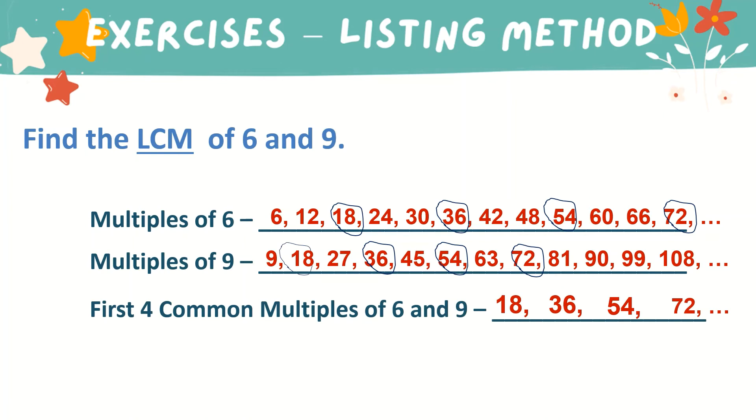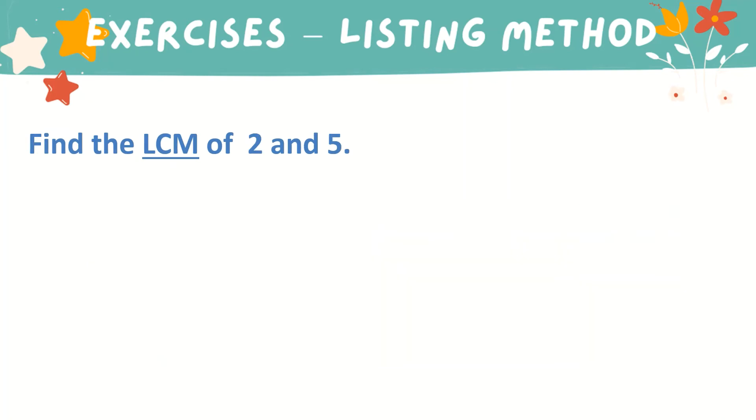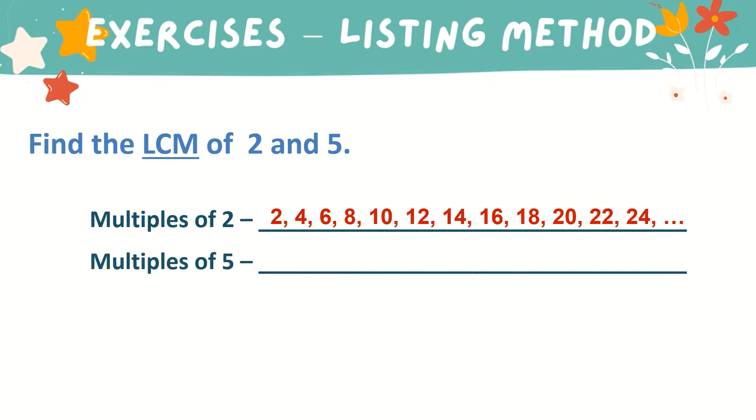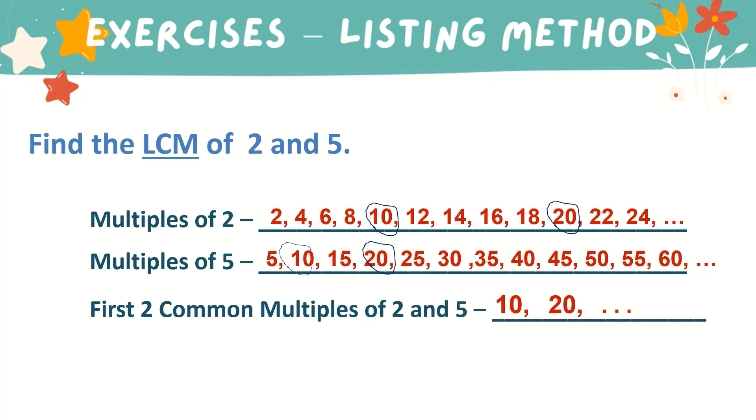Next, find the LCM of 6 and 5. These are the multiples of 2, and these are the multiples of 2 and 5. These are also the common multiples of 2 and 5. We have 10 and 20. Based on the list, there are only 2. We have 10 and 20, but there are still more. Between the 2, the least is 10.